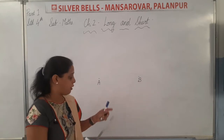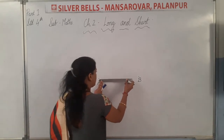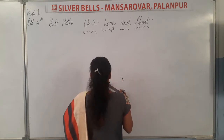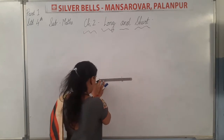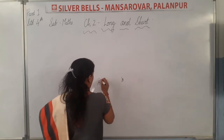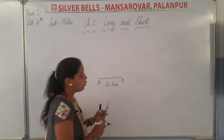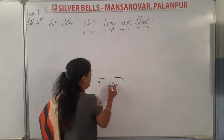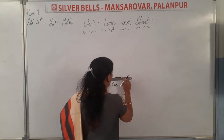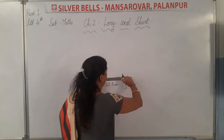Ham centimetre mein isko naapte hai. So here, we are going to use a scale. I am having a very small scale. So here, I will make my point B. I will start from the first line over here and keep it here. And my measure is 22.5 centimetre. I hope you must have understood this reading 22.5 — ye point 5 mein kya hota hai? After 22, you have to count the lines: 1, 2, 3, 4, 5. So it is 0.5. Clear?